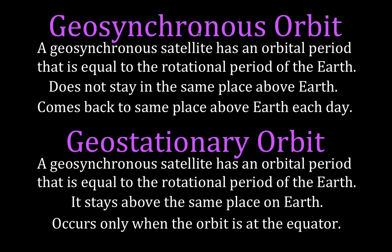Here's a quick summary slide. For a geosynchronous orbit, the satellite has an orbital period equal to the rotational period of the Earth. For geostationary, it's the same thing, but the satellite does not stay in the same place above the Earth — it will come back to the same place in the sky above the Earth every day. A geostationary orbit stays above the same place with respect to a point on Earth, but it only occurs when the orbit is at the equator.